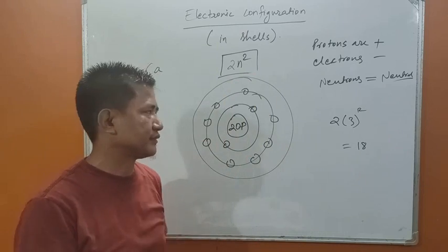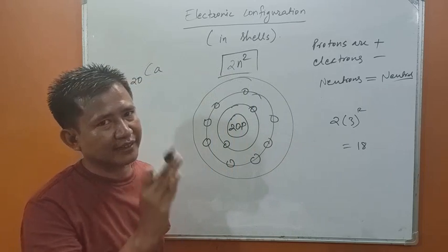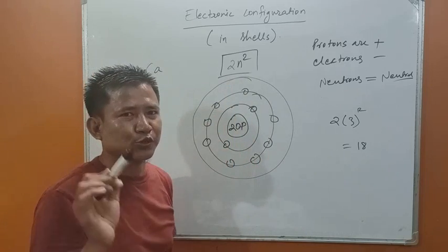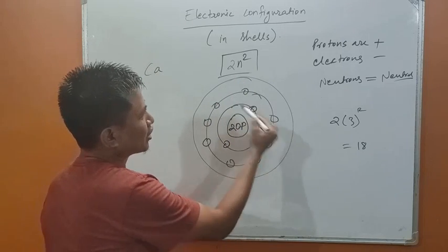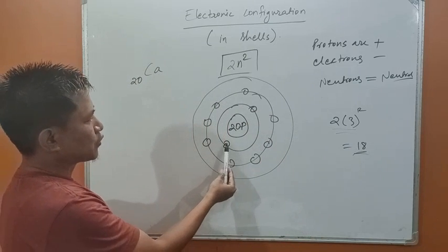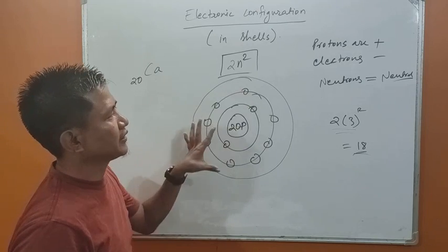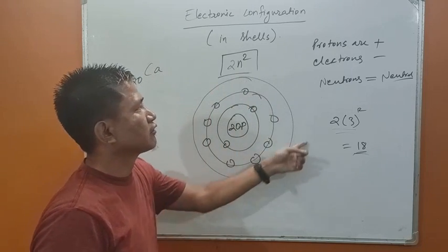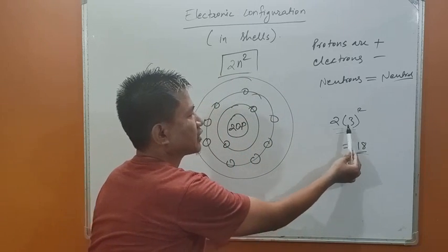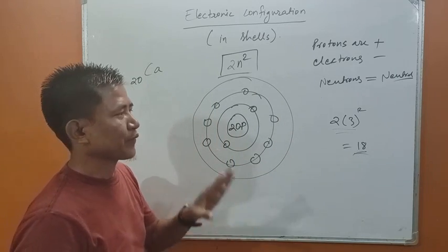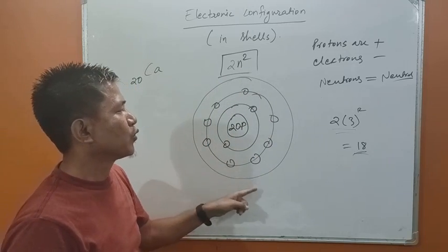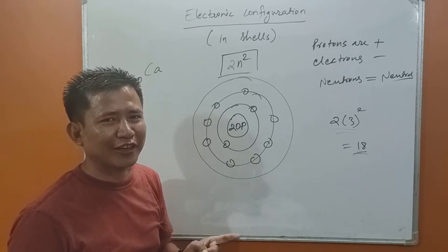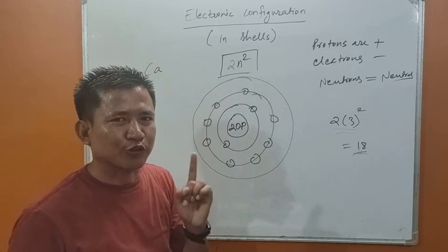The maximum number of electrons in the outermost orbit should be equal to 8 or less than 8. While writing electrons in shells, keep this rule in mind. Since the third orbit can hold up to 18 electrons, and we have spent 2 plus 8 equals 10 electrons already, 10 electrons remain. But we cannot put all 10 in the outermost orbit because the maximum number of electrons in the outermost orbit must be 8 or less.